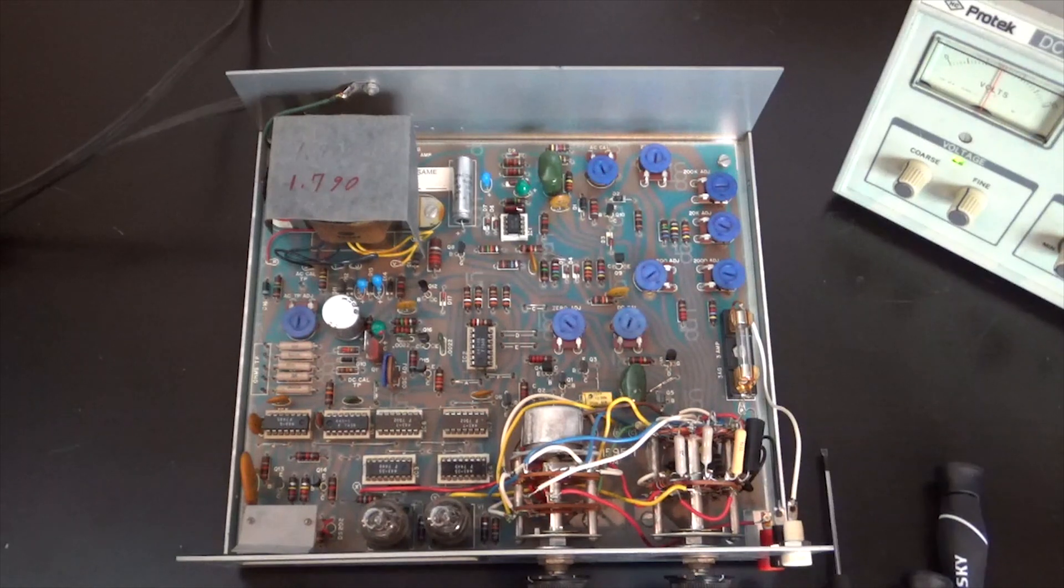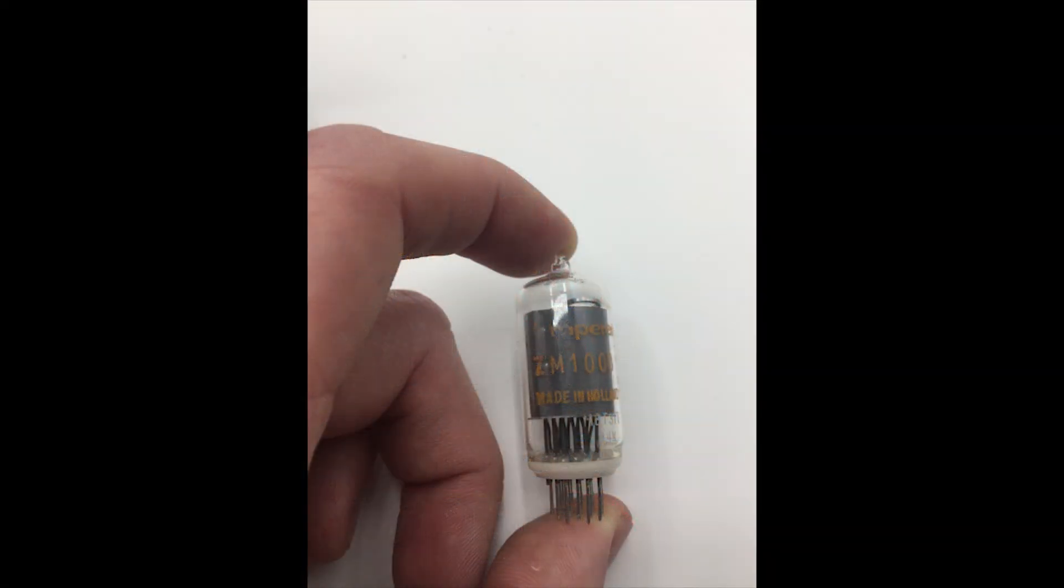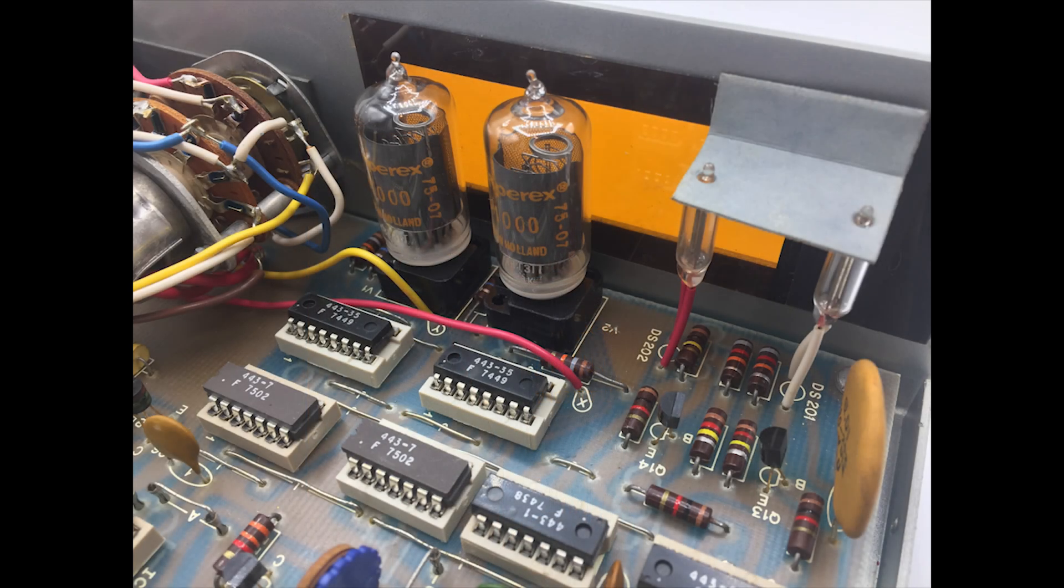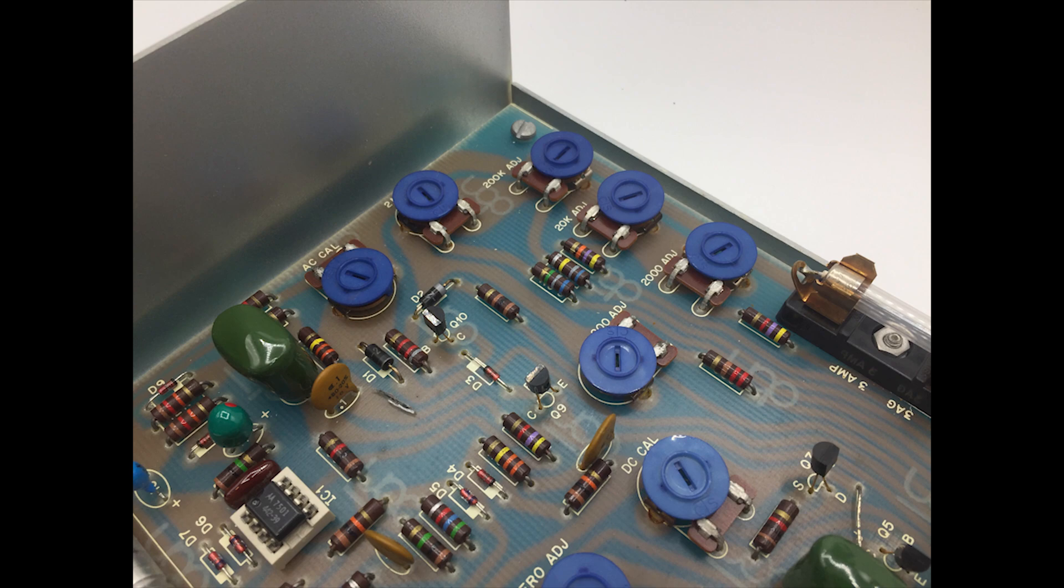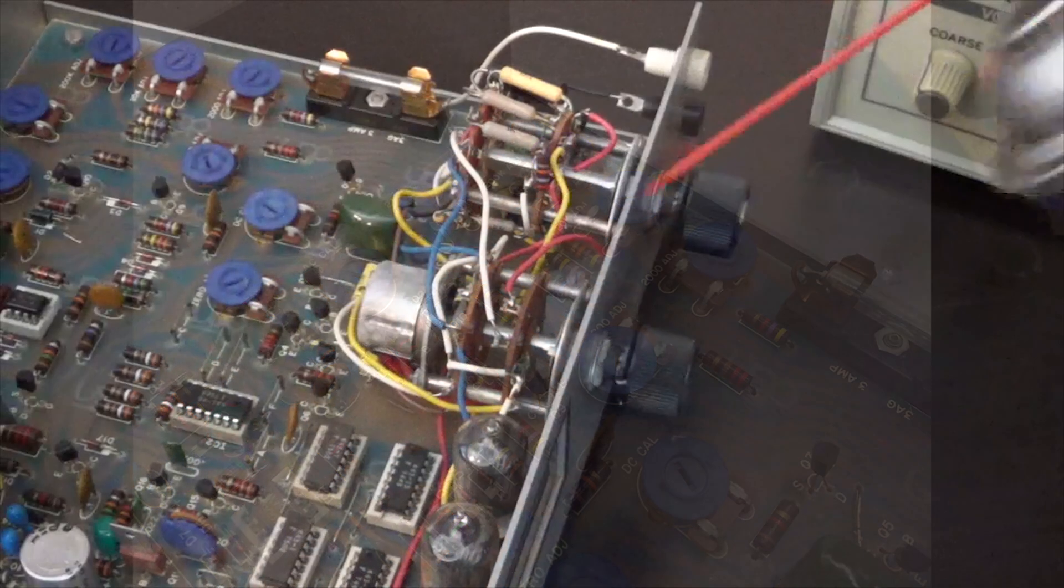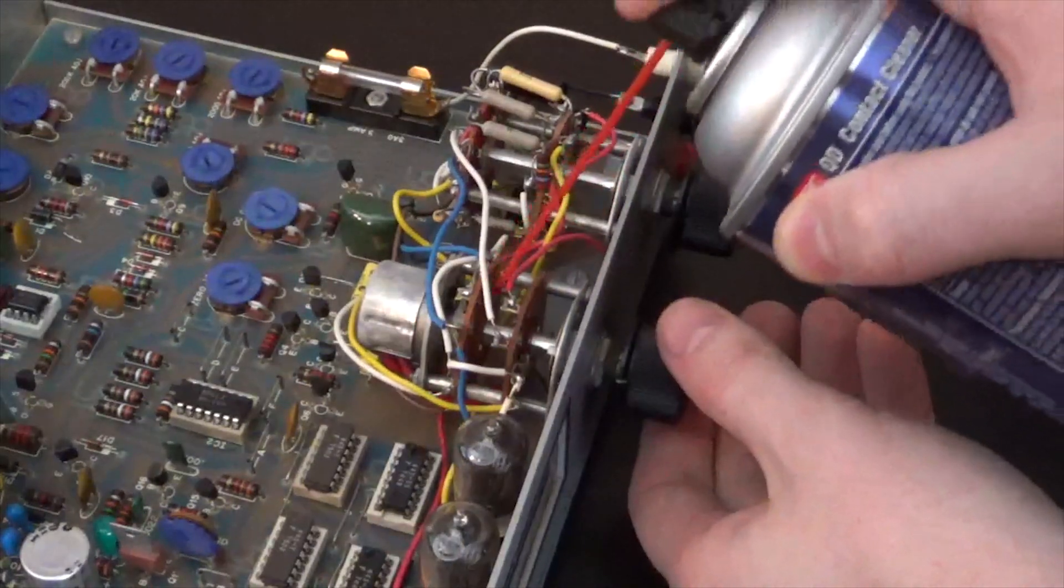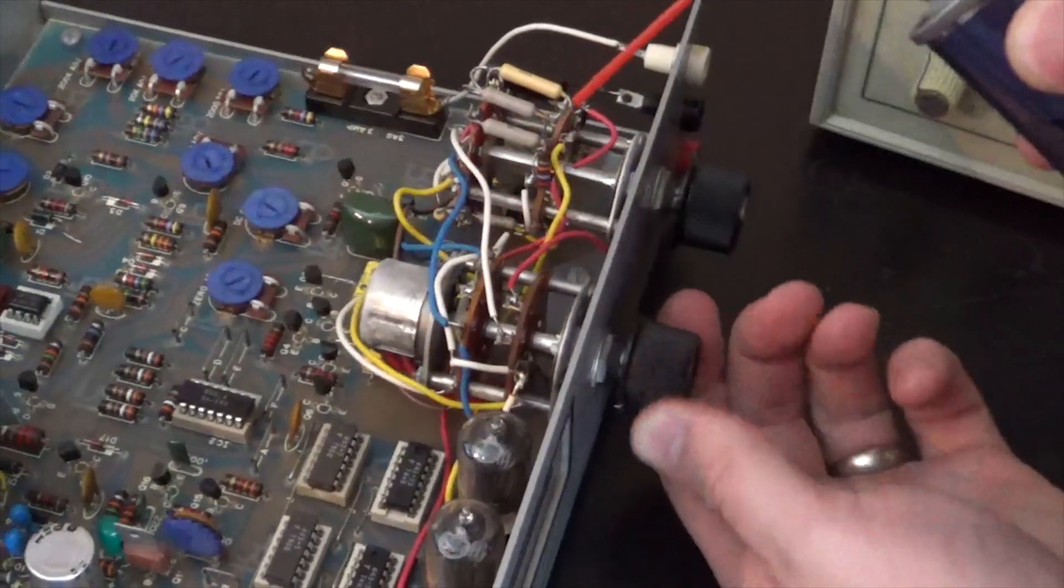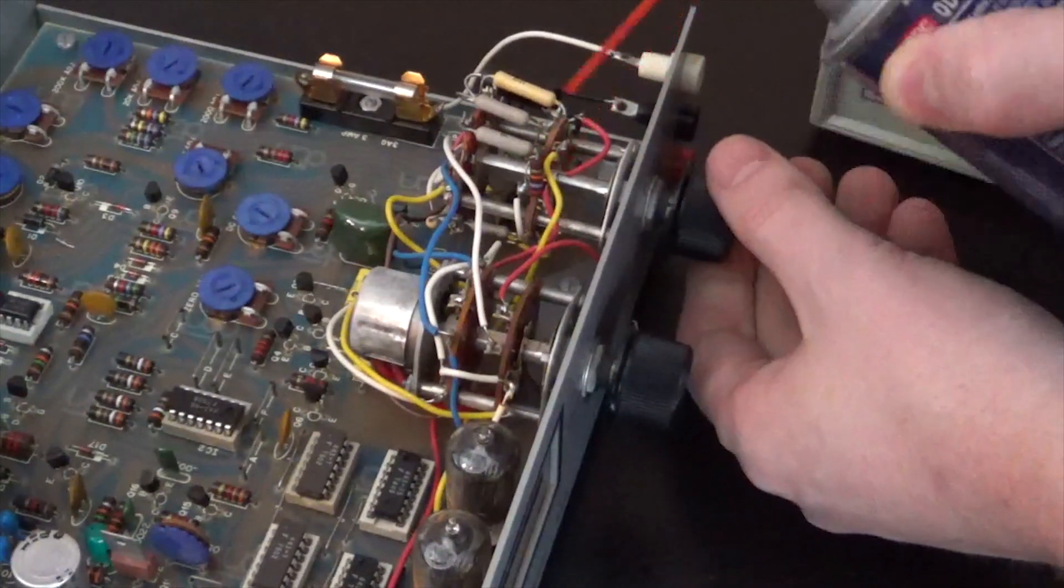You get a little better shot of the Nixie tubes inside, as well as the two indicator lamps. The lamps provide the one, as well as the over light. We see adjustment pots, as well as our two main pots, which I'm going to hit with a little bit of contact cleaner. I haven't had any issues, but we're in here, so we might as well give it a shot.